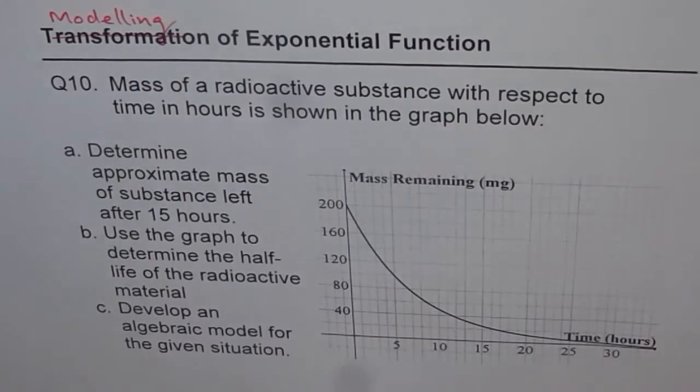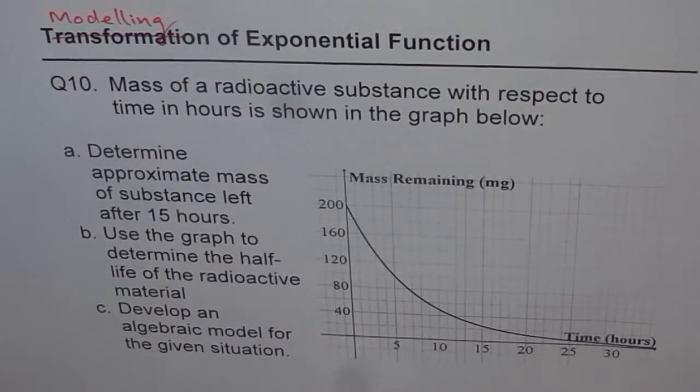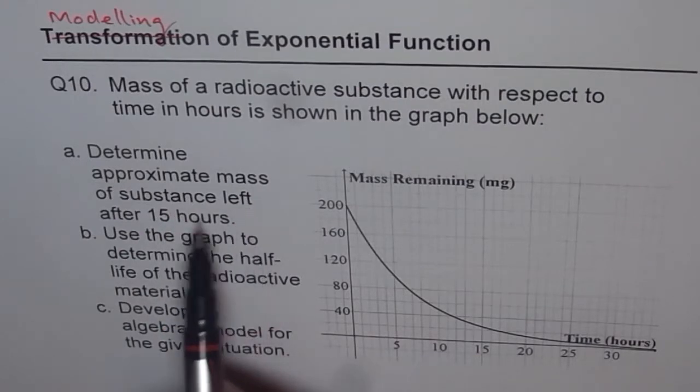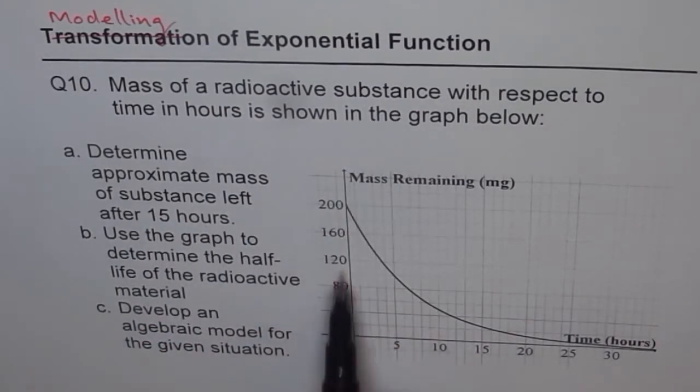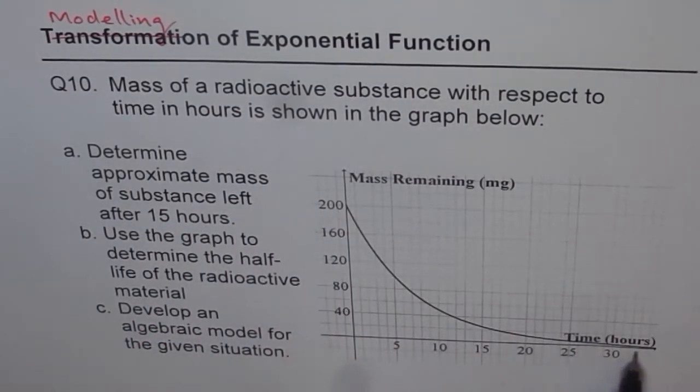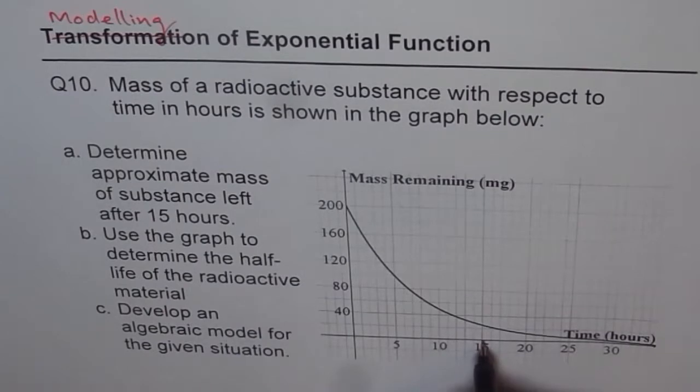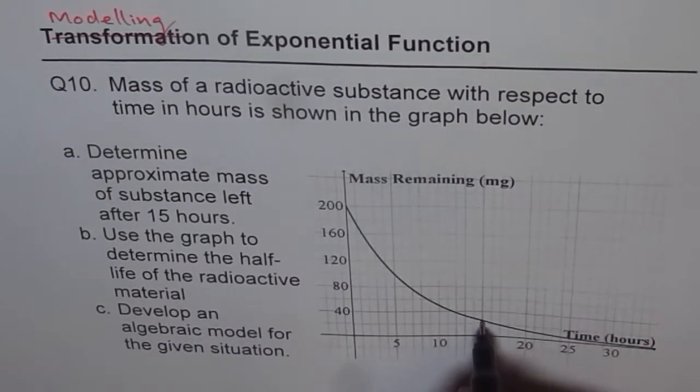Now let's start with part A of this question, which is determine approximate mass of the substance left after 15 hours. So that is the graph given to us, time in hours and mass remaining in milligrams. After 15 hours, that is 15, so we can go up and that's the point.